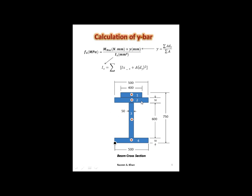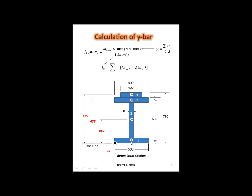We don't have a symmetrical shape in the y-direction, so we have to go and calculate the y-bar using this formula. To do that, we're going to make a reference to the bottom. All of the centroids of these simple shapes — the individual shapes — are located approximately at this location.